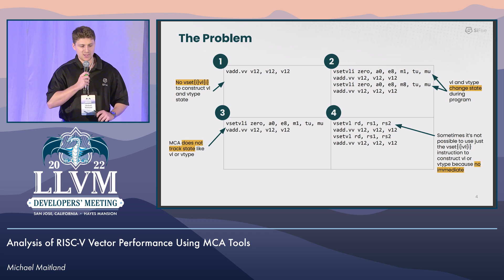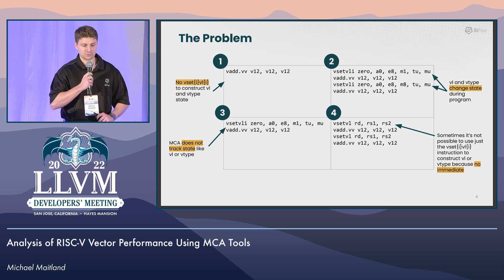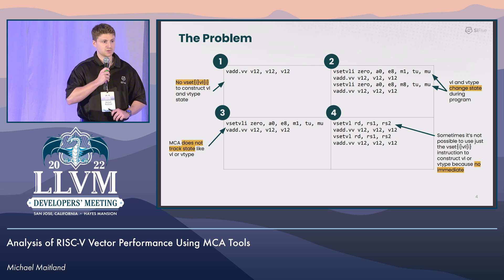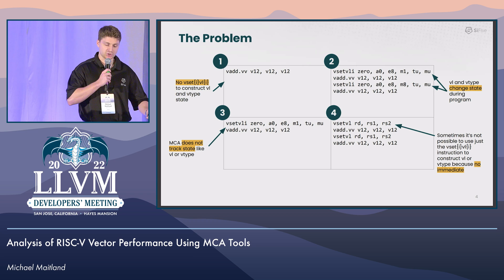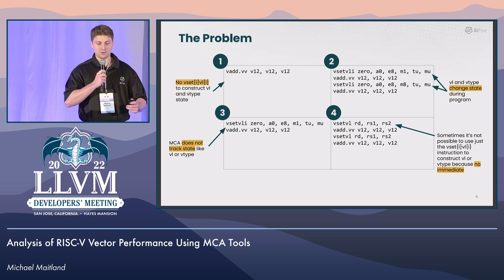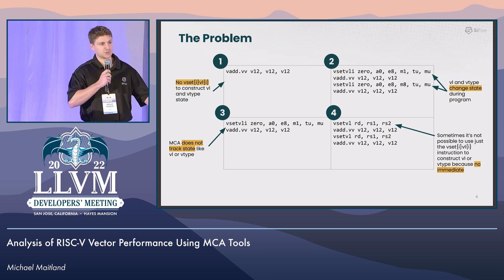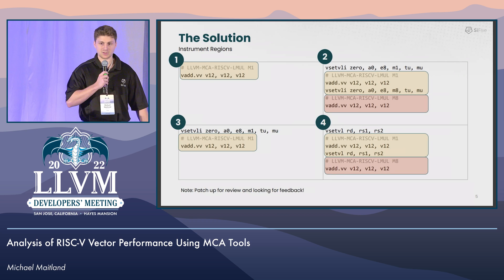If we look at a V-set VLI instruction in example three that operates on immediate values — while MCA currently ignores immediate values, why can't we pull it out from that? That's a good suggestion, but in example four there are variations of the V-set VL instruction that operate on registers and not immediates. So how do we solve these problems?